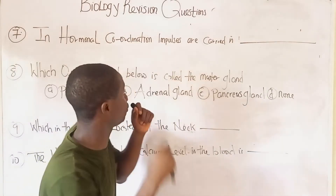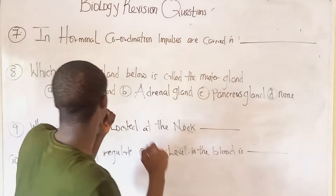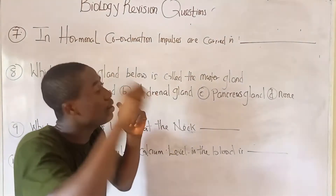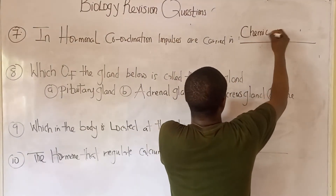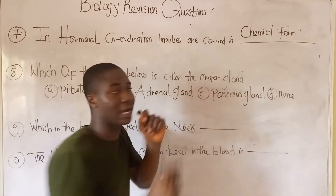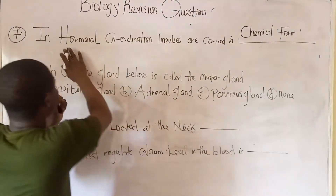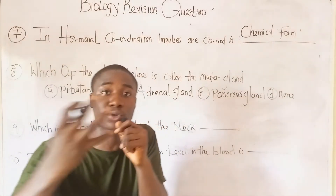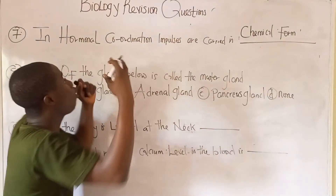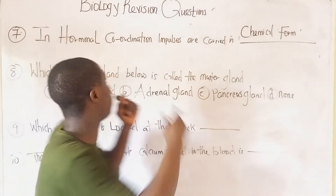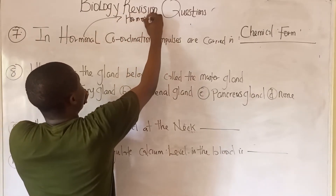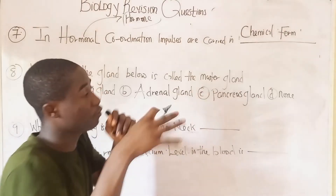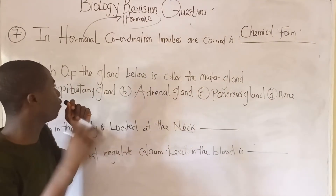Question seven: in hormonal coordination, impulses are carried in chemical form. In the nervous coordinating system, impulses are carried in electrical and sometimes chemical form. However, in the hormonal coordinating system, since hormones are chemical substances, the impulses are carried in chemical form.